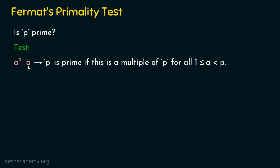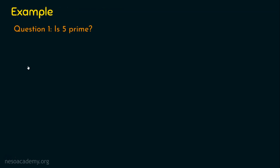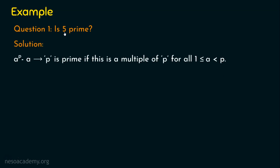Let's see an example. The first example: is 5 prime? I am taking a small number so you can easily understand the algorithm. From the question, it is clear that p is 5. We are going to determine whether this is a prime number. We start from a = 1 up to less than p, which is 4. Since p = 5, a takes values from 1 to 4.